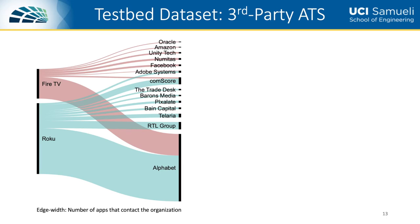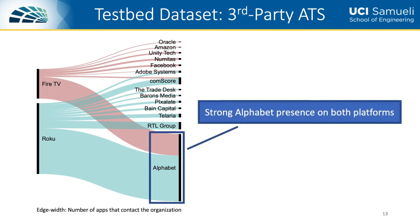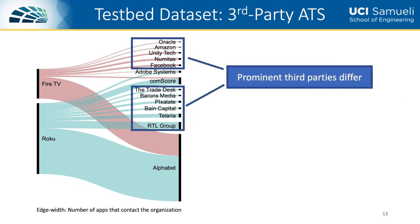Next, we want to understand what third-party organizations dominate the ATS ecosystems of the two platforms. We determined the parent organizations of the top 20 third-party ATS domains of each platform. We see that Alphabet — more commonly known as Google — has a strong presence on both platforms. However, more interestingly, most of the remaining organizations differ across the two platforms. This indicates that some companies focus on a single platform, which once again points towards substantial differences in the ATS ecosystems of the two platforms.